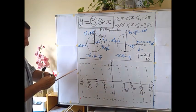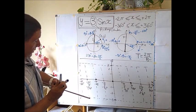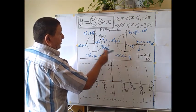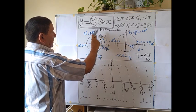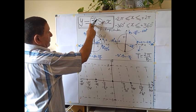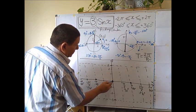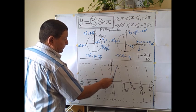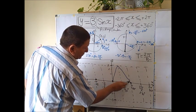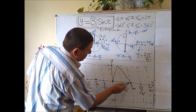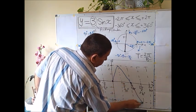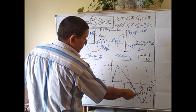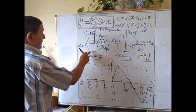Now it's time to sketch. The sine starts at 0, reaches the maximum at π/2 on the positive side. Since sin(90°) = 1 and we multiply by 3, the wave goes up to 3. It returns to 0 at π, drops to -1 × 3 = -3 at 3π/2, and comes back to 0 at 2π — completing one full wave on the positive side.